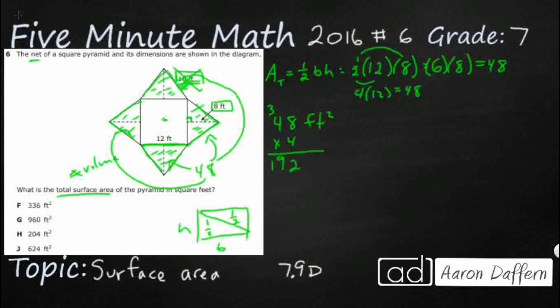Now 192 is not an option. I'm glad they didn't make that an option because it's not correct—it's just the triangles. But it would have been tricky if they would have left that as one of the options. We have to get the square.